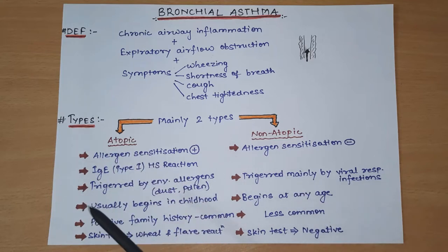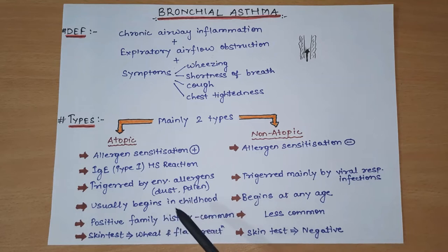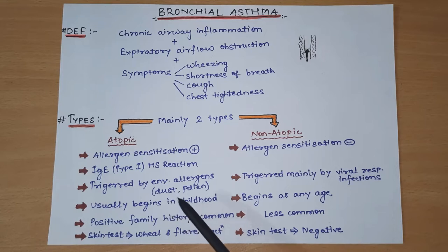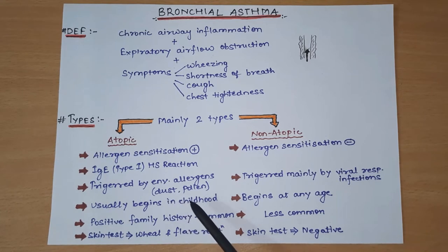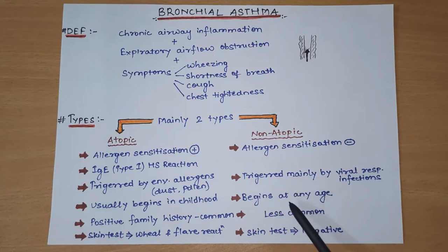Atopic asthma usually begins in childhood because genetic susceptibility is present - due to this genetic susceptibility, asthma symptoms are seen in the patient from childhood itself. Non-atopic asthma, on the other hand, can begin at any age.